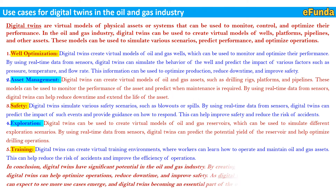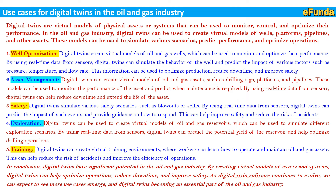In conclusion, digital twins have significant potential in the oil and gas industry. By creating virtual models of assets and systems, digital twins can help optimize operations, reduce downtime and improve safety. As digital twin software continues to evolve, we can expect to see more use cases emerge and digital twins become an essential part of the oil and gas industry. In today's video, we have seen how digital twin technology is implemented in the oil and gas industry, its benefits, and its use cases.